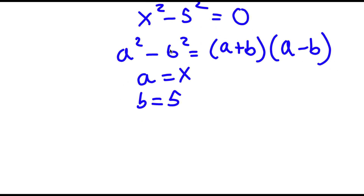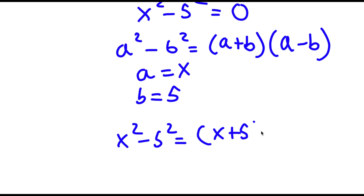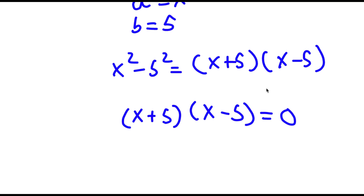So x squared minus 5 squared, this is going to equal a plus b, so x plus 5, times a minus b, so x minus 5. Now if I replace this with x squared minus 5 squared, I get x plus 5 times x minus 5 is equal to 0.